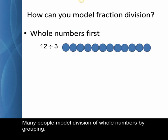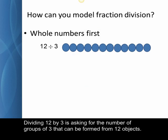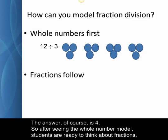Many people model division of whole numbers by grouping. Dividing twelve by three is asking for the number of groups of three that can be formed from twelve objects. The answer, of course, is four. So after seeing the whole number model, students are ready to think about fractions.